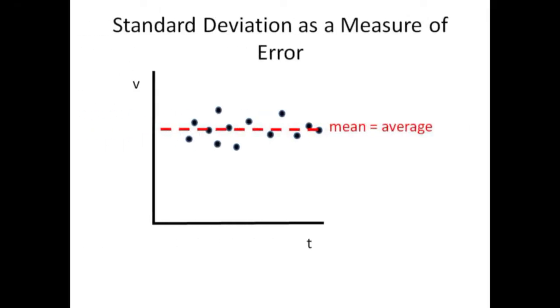When the velocity is constant, we expect a flat line for velocity versus time. Yet one expects variation in any real experimental data. The mean gives us a reasonable measurement of velocity in this case, yet there is variation. The values could be as large as the mean plus one standard deviation and as small as the mean minus one standard deviation.